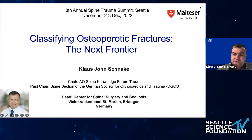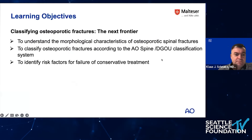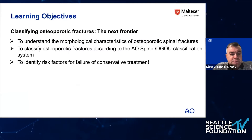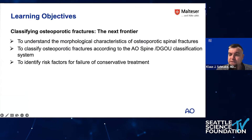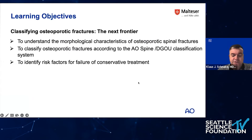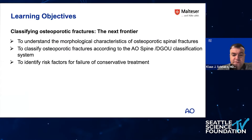The idea of this talk is to give you a little bit of understanding about the morphological characteristics of osteoporotic spinal fractures, to classify them according to the AO Spine DGO classification, and to identify risk factors for conservative treatment.